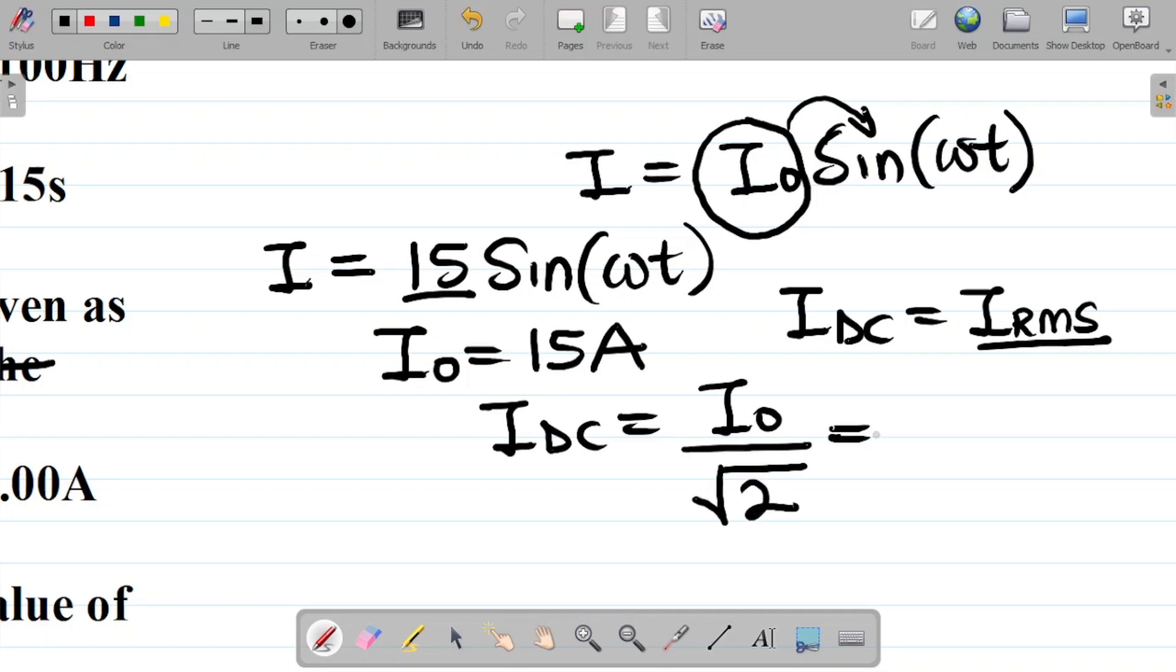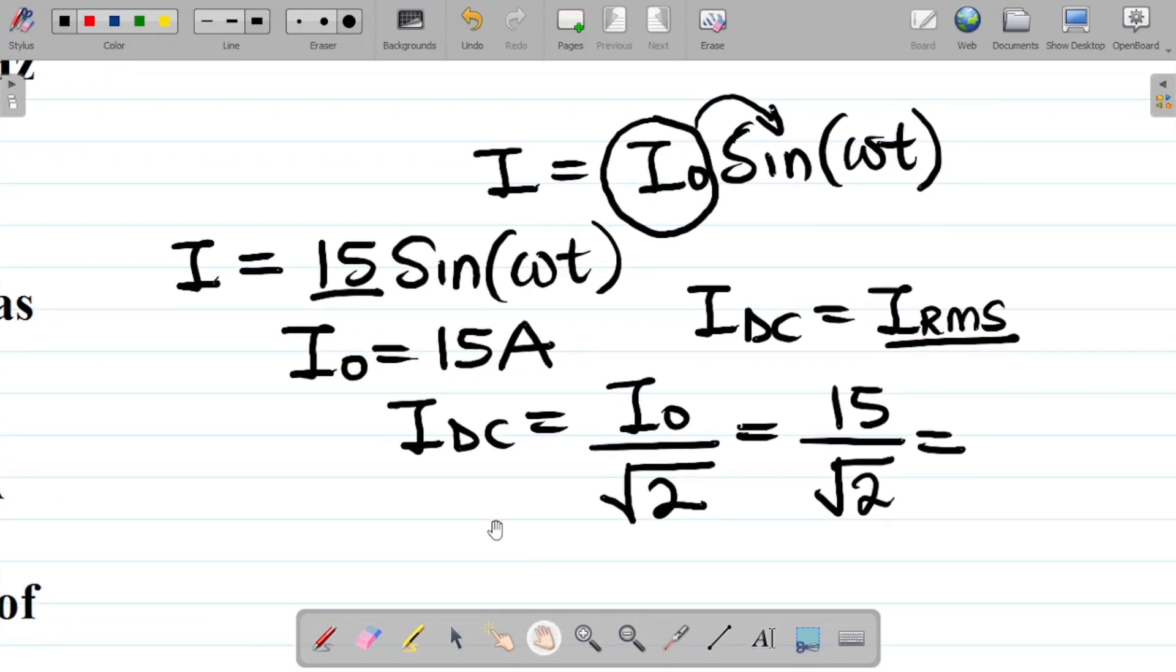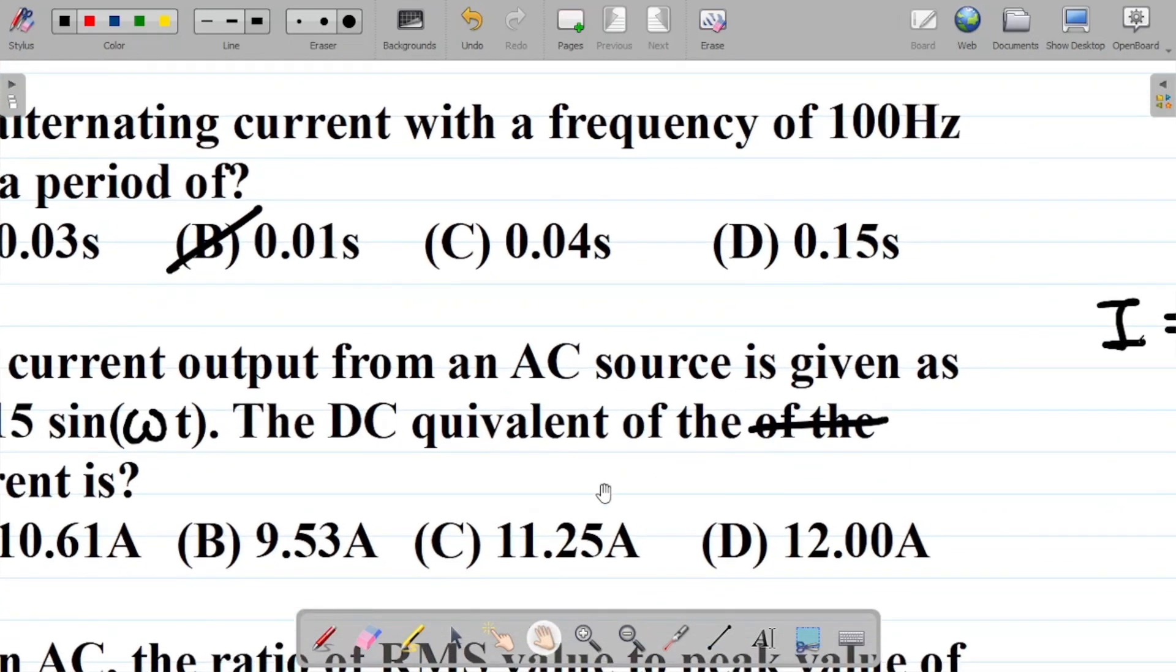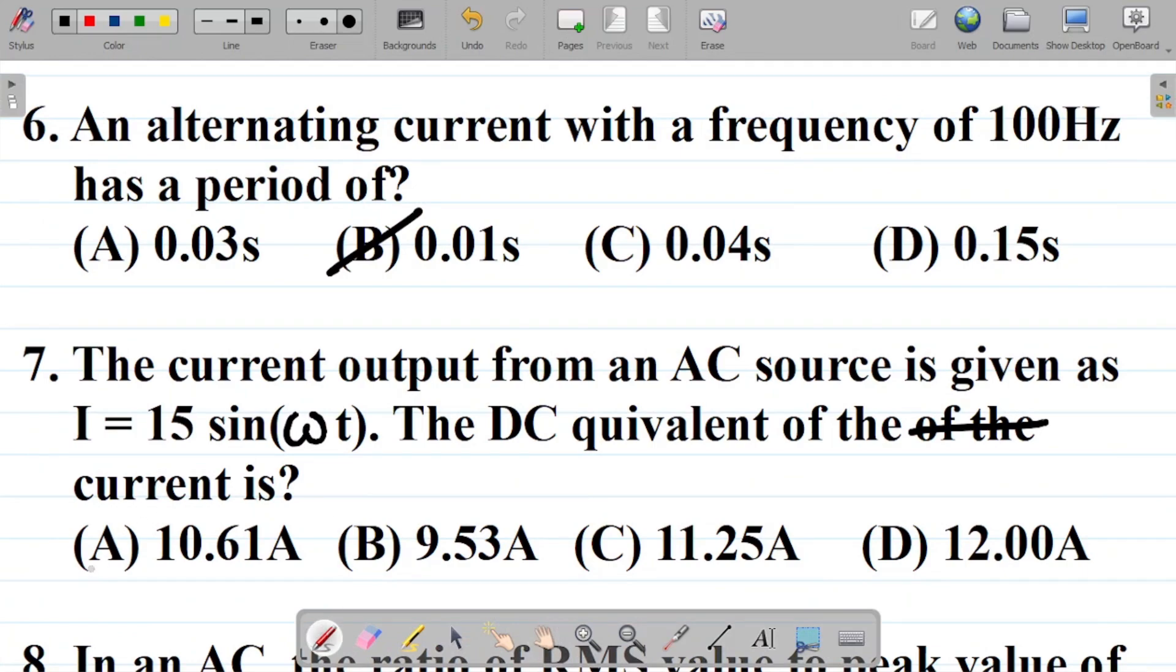We know that IRMS, which in this case we're using IDC, is equal to the ratio of the peak value to the square root of 2. As we said in part 1, this would be equal to the peak value which is 15, over root 2. That's about 10.61 approximately. So I have 10.61 amperes as direct current. That's option A, 10.61 amperes. So option A is the correct answer.